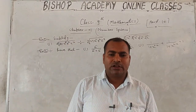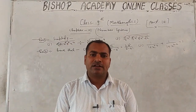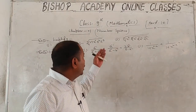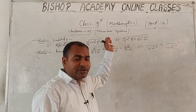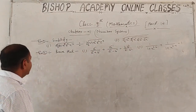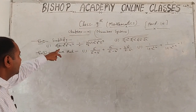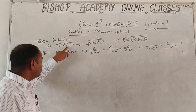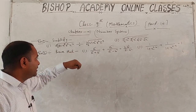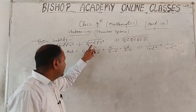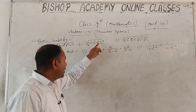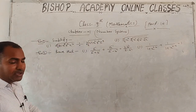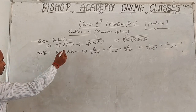Dear students, most welcome to the online classes of Bishop Academy, Maharajganj. Today we will simplify some questions related to Number System. Example number one: simplify the 4th root of (81 x⁸ y⁴ z¹⁶) divided by the cube root of (27 x³ y⁶ z⁹), where x, y, z are real numbers.